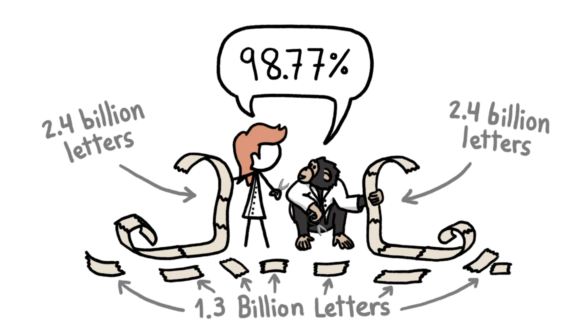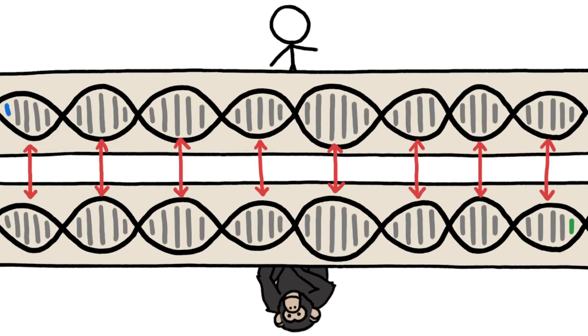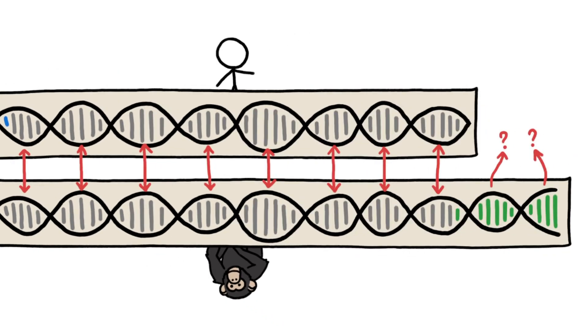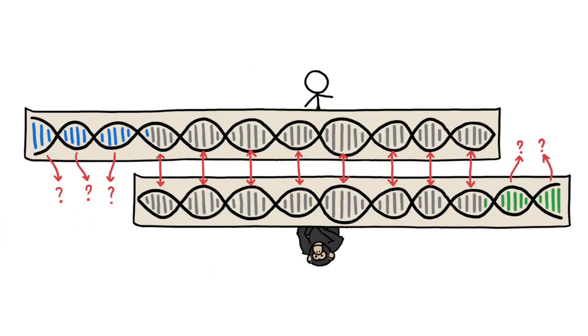So, yes, we share 99% of our DNA with chimps if we ignore 18% of their genome and 25% of ours.